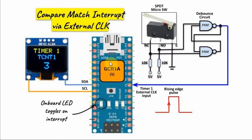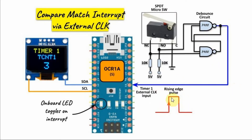In this first example, we'll program Timer 1 to give us a compare match interrupt through an external clock signal. The external clock signal is generated by a circuit where we have an SPDT micro switch coupled with a debouncing circuit that manually gives us a rising edge pulse, which is fed into pin D5 of the Arduino.